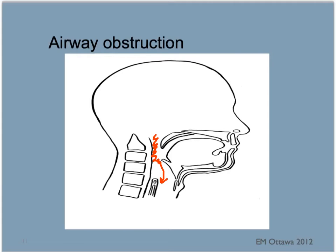Any distortion of the anatomy can cause obstruction as well. That can include fracture or swelling from an expanding hematoma that leads to compression. In patients with a decreased level of consciousness, their tongue can fall backwards due to poor muscle tone, causing airway obstruction.